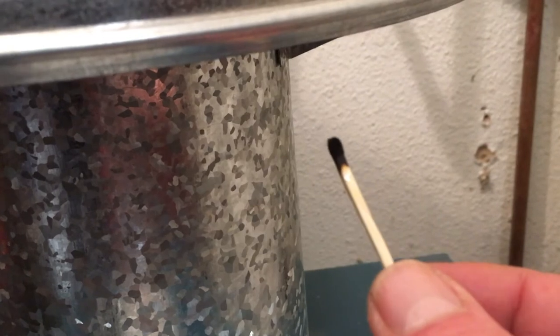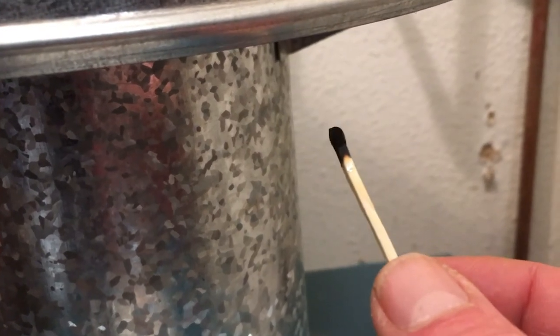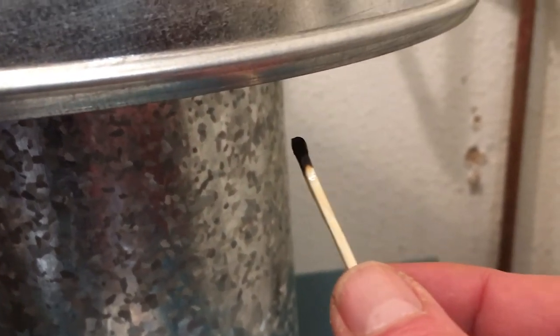Blow out the match or give it a shake so that it goes out, and watch to see that the smoke from the match flame is drawn up into the draft diverter, into the vent connector, and into the main chimney. You can see that there's a negative draw, a negative pressure in the venting system, which is ideal.